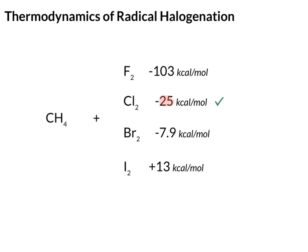But now let's go up here to the radical fluorination. It's exothermic, but look at the value, 103. That's a huge, huge number. This is essentially an uncontrollable reaction. So that's why we don't do radical fluorinations.